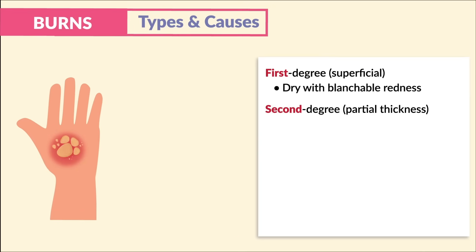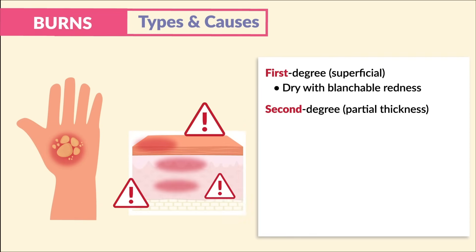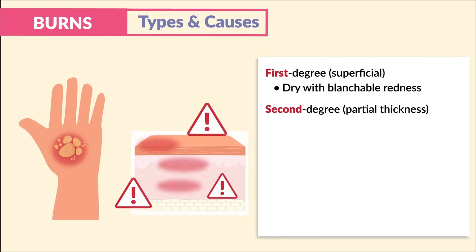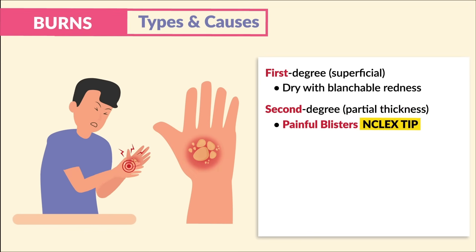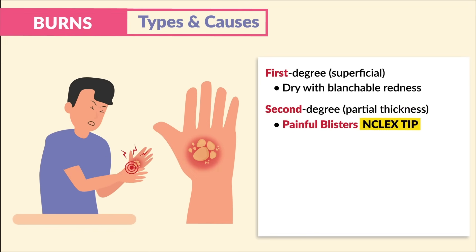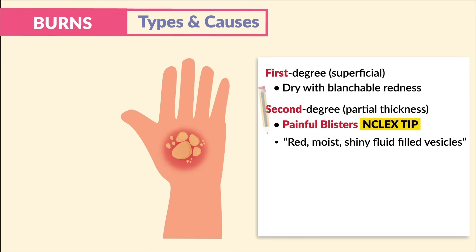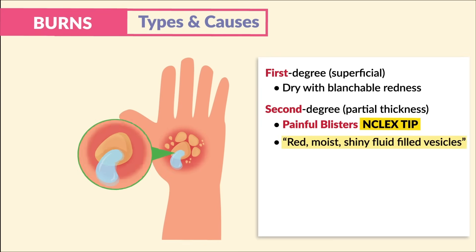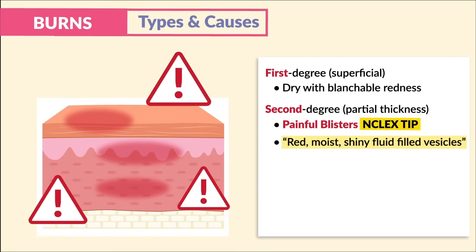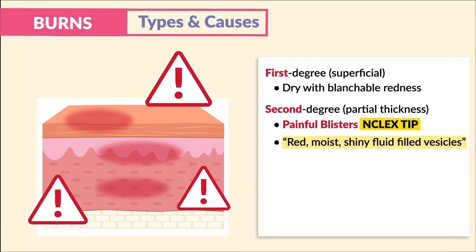Second degree burns, called partial thickness burns, have both the epidermis and dermis damaged. The key sign to know is painful blisters — huge NCLEX tip. Key words: red, moist, and shiny fluid-filled vesicles, or blisters that often leak fluid. Just think two layers of skin for second degree burns.